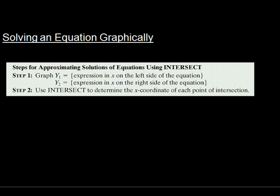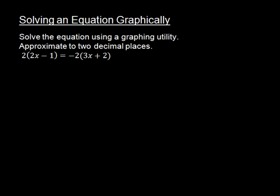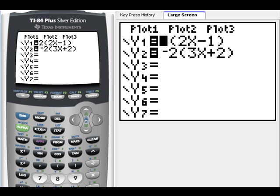Next I'm going to show you how to solve an equation graphically using our calculator. We're going to put each side of the equation — the left side into y1, the right side into y2 — and then I'll show you how to find the intersection. Let's solve the equation using a graphing utility and approximate the answer to two decimal places. As you see, I put the left side of the equation into y1 and the right side into y2. I did not distribute — I just put it in exactly as I see it. We don't want to make things more complicated than we need to.